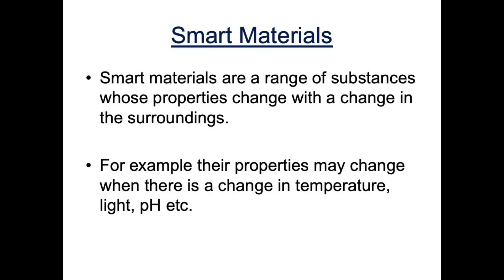So let's start with the definition of a smart material. Smart materials are a range of substances whose properties change with a change in their surroundings. For example, their properties may change when there's a change in temperature, when there's a change in the intensity of light, when the pH changes, etc.